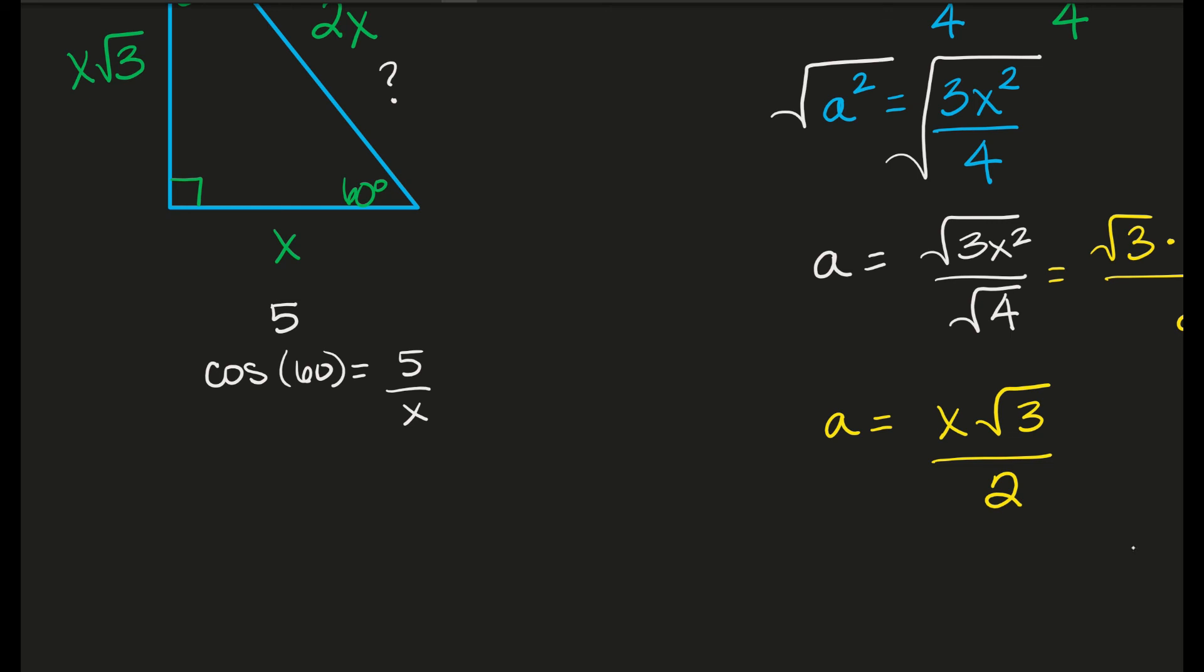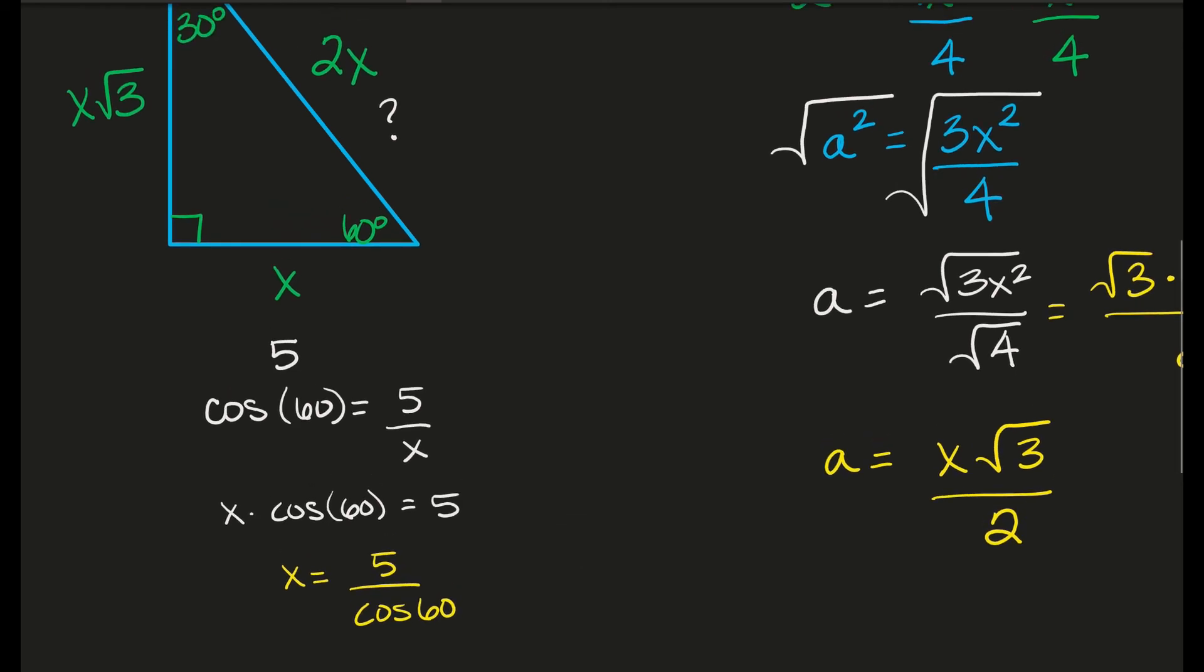So here I would just say cosine of 60 degrees equals my adjacent leg over hypotenuse. So I have adjacent leg over hypotenuse. Now, when I solve this, I can just cross multiply. So I have X times cosine 60 equals 5. We want the value of X. So here we just divide and say, X has to be 5 divided by cosine of 60. Well, if you type that in on your calculator, make sure you're in degrees. If your calculator is in radians, you're not going to get the same number I get. But 5 divided by cosine of 60 is going to be 10 because cosine of 60 is 1 half. And 5 divided by 1 half is 10. Oh, look, that's twice the value of the short leg.